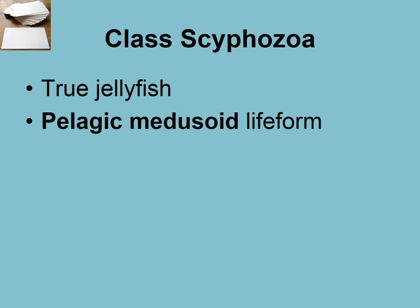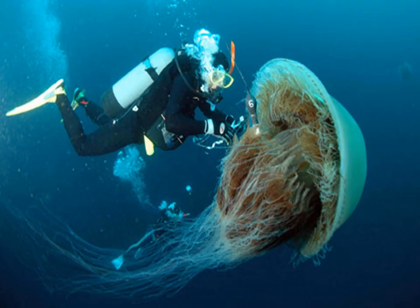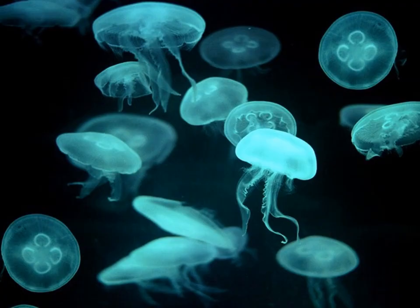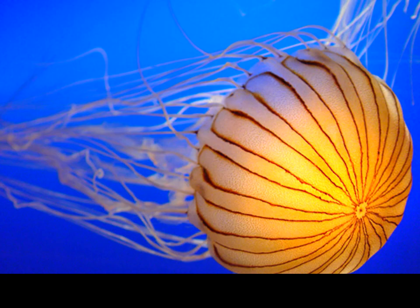That's it for the class Hydrozoa. We're going to move to class Scyphozoa. Scyphozoa are true jellyfish, and they are pelagic — pelagic means wandering around in the water column, not attached to the bottom. Here's a nice picture of what a jellyfish looks like; they take lots of beautiful forms with a huge amount of diversity within the Cnidaria.